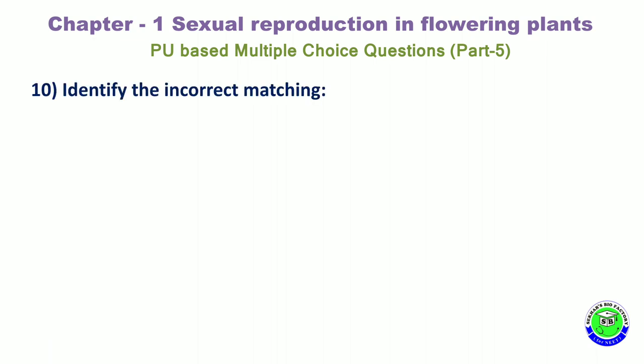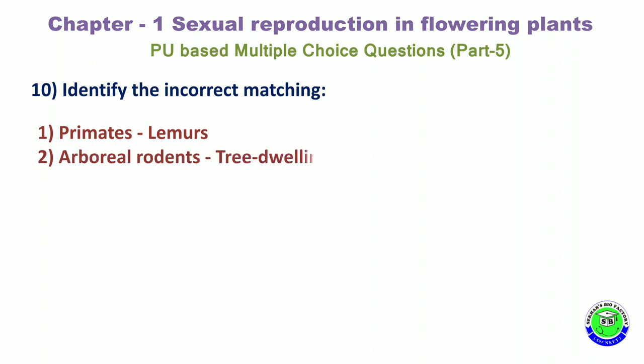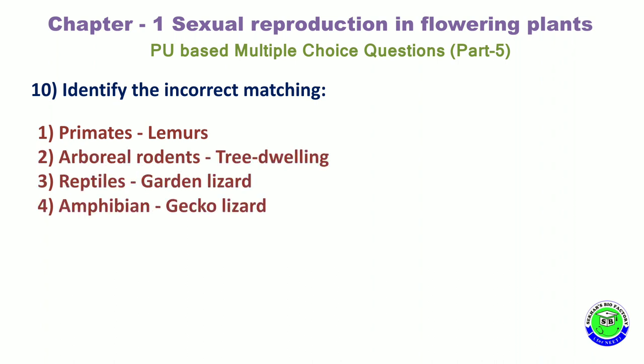Question 10. Identify the incorrect matching. Option 1: Primates — lemurs. Option 2: Arboreal rodents — tree-dwelling. Option 3: Reptiles — garden lizards. Option 4: Amphibians — gecko lizards. The correct answer is the 4th option.